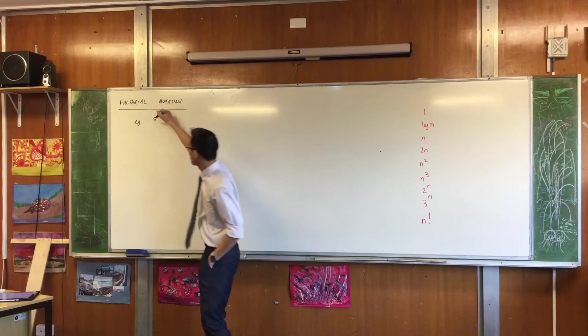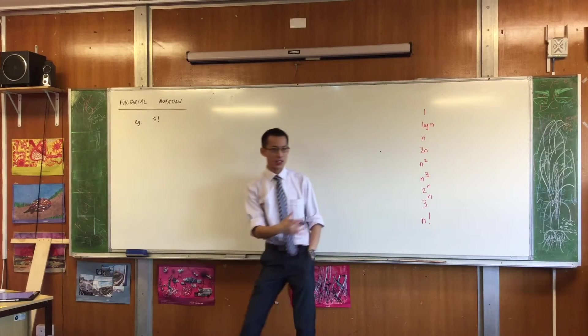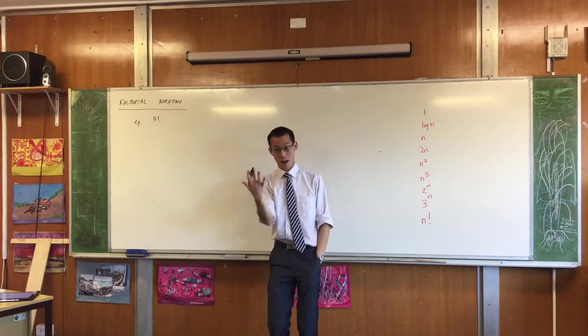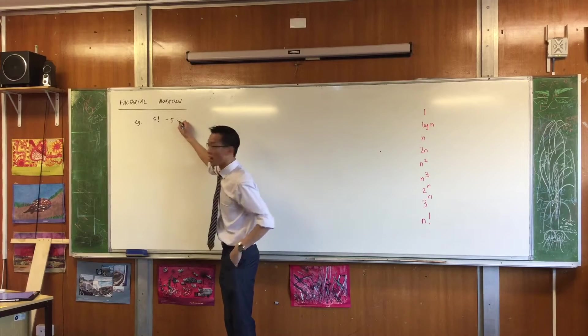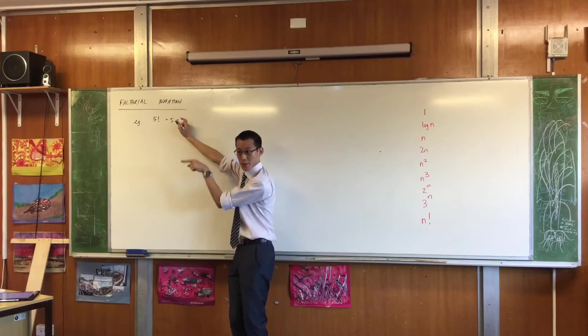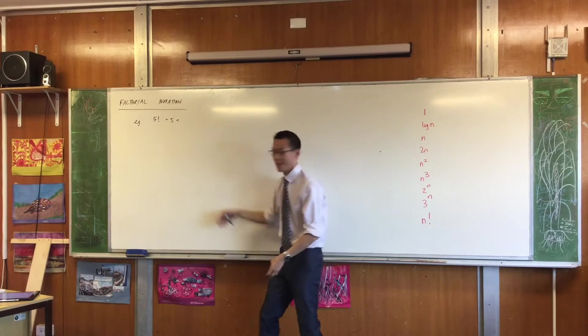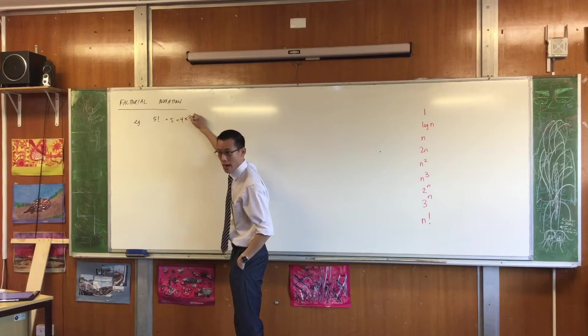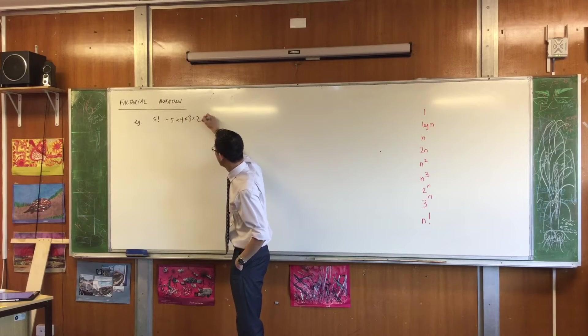Where that 120 comes from is we say 5 factorial is 5 times, do you remember I multiplied all those previous numbers along the bottom here? So it's going to be times 4, times 3, times 2, times 1.